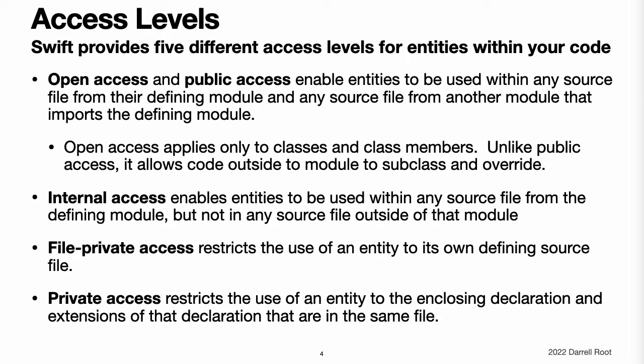Use private access to hide the implementation details of a specific piece of functionality when those details are used only within a single declaration. Open access is the highest, least restrictive access level, and private access is the lowest, most restrictive access level. Open access applies only to classes and class members, and it differs from public access by allowing code outside the module to subclass and override, as discussed below in subclassing. Marking a class as open explicitly indicates that you've considered the impact of code from other modules using that class as a superclass and that you've designed your class's code accordingly.